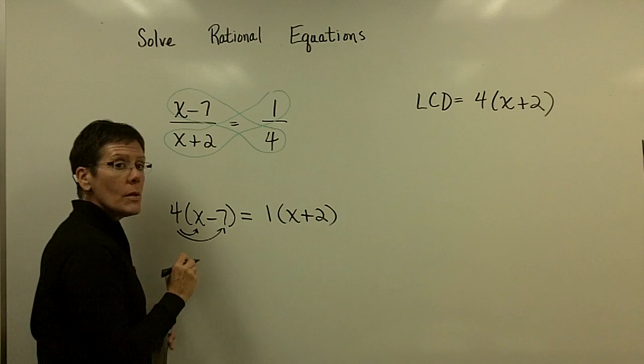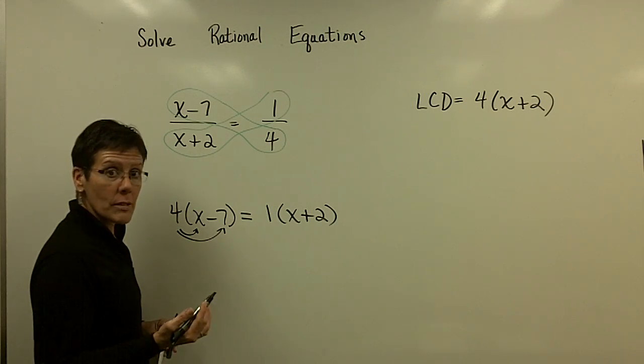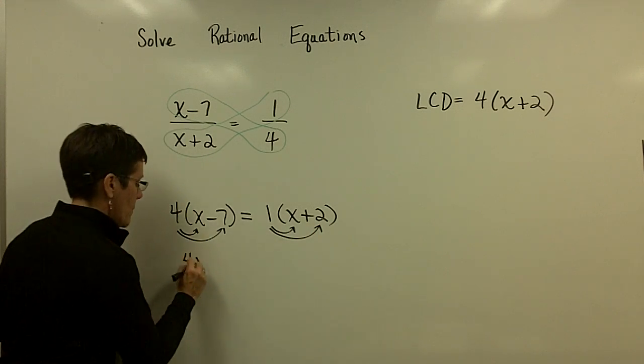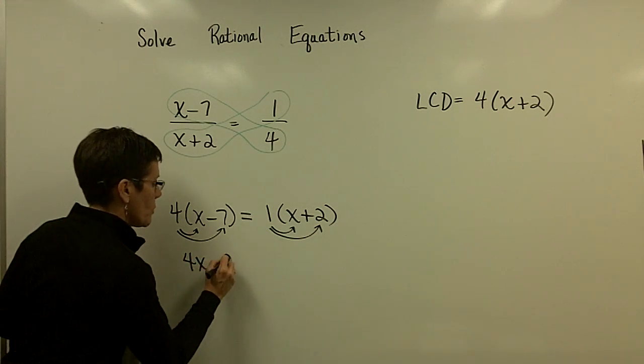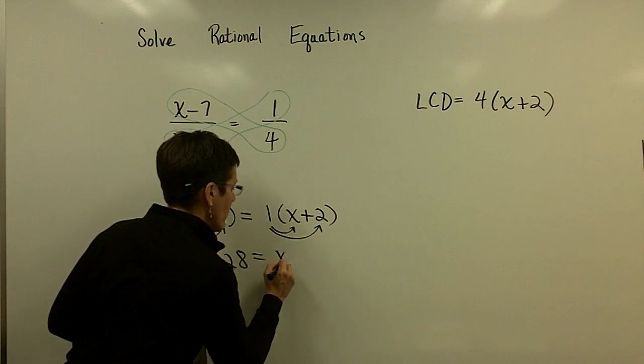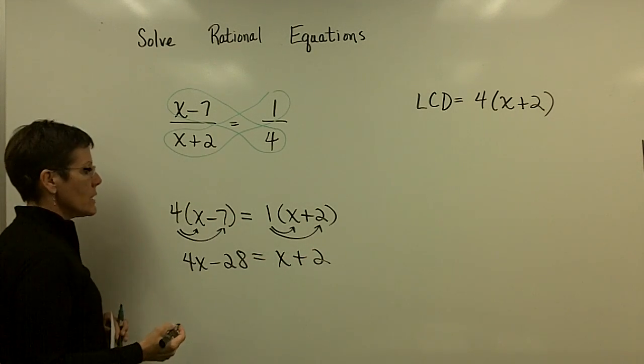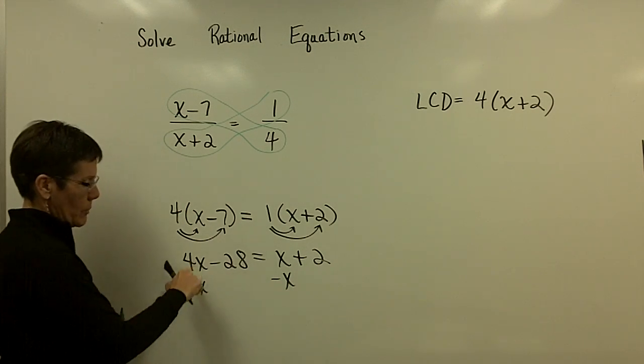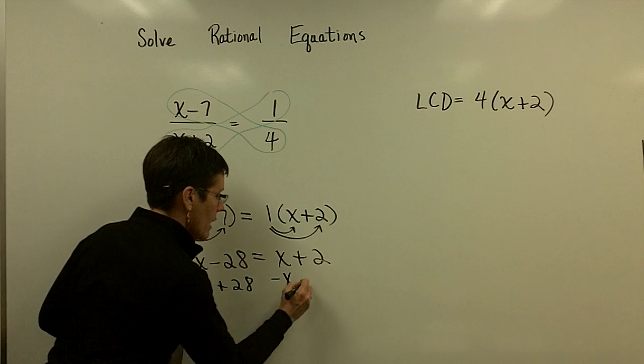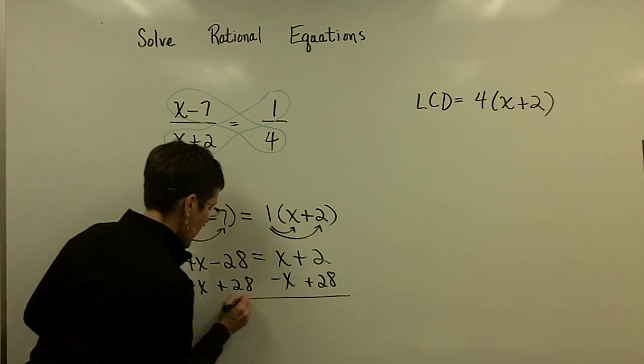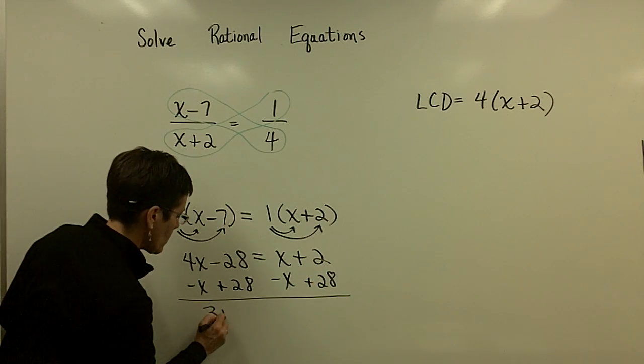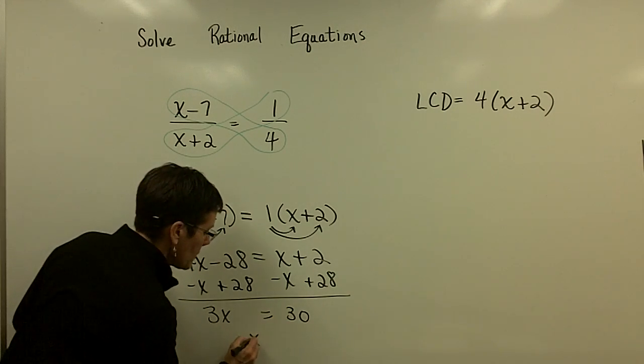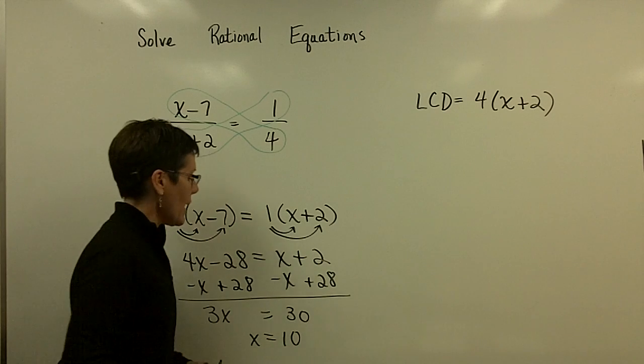This fraction right here had the 4. It was missing the (x+2). So, the 1 would have gotten multiplied by that (x+2). And now, just a simple problem. If I ever end up with a squared term, I might have to solve it by factoring or the quadratic formula. But I haven't come across this yet. This is just still a linear equation. So, I'm going to subtract x from both sides. I'll have a 3x here. I'm going to add 28. So I have 3x right here and a 30 over here. And when I divide both sides by 3, I'm going to find out that my solution for x is 10.